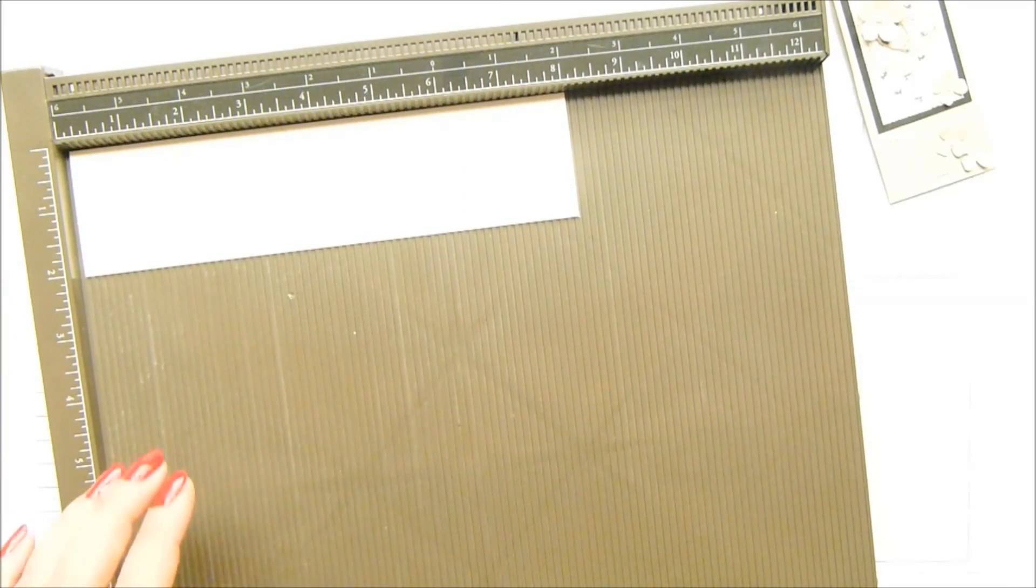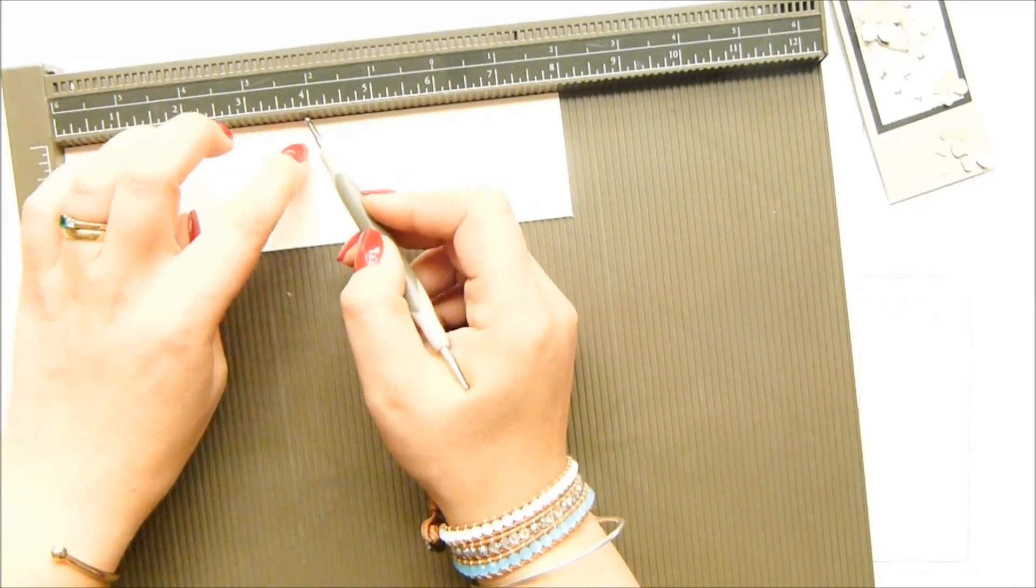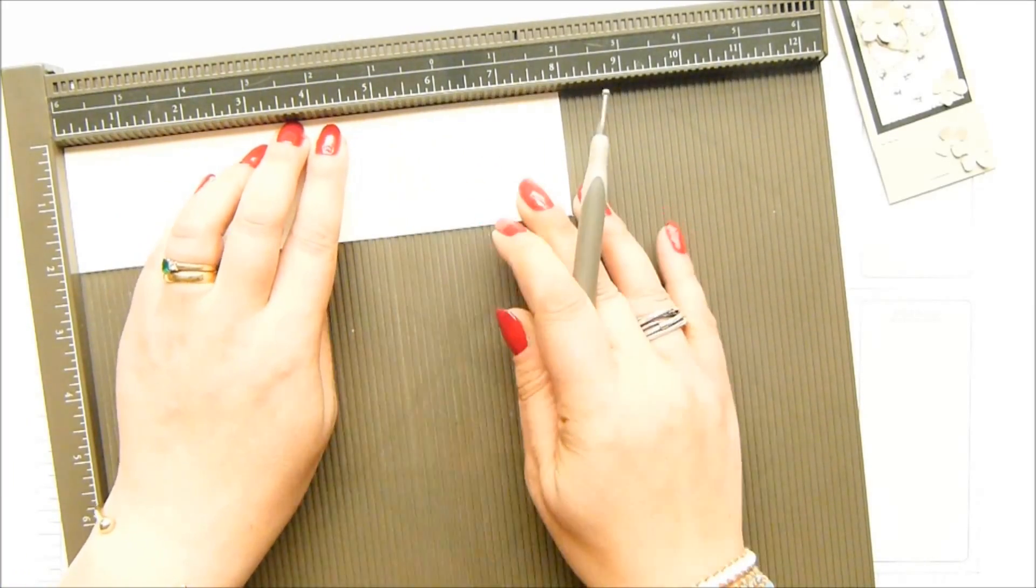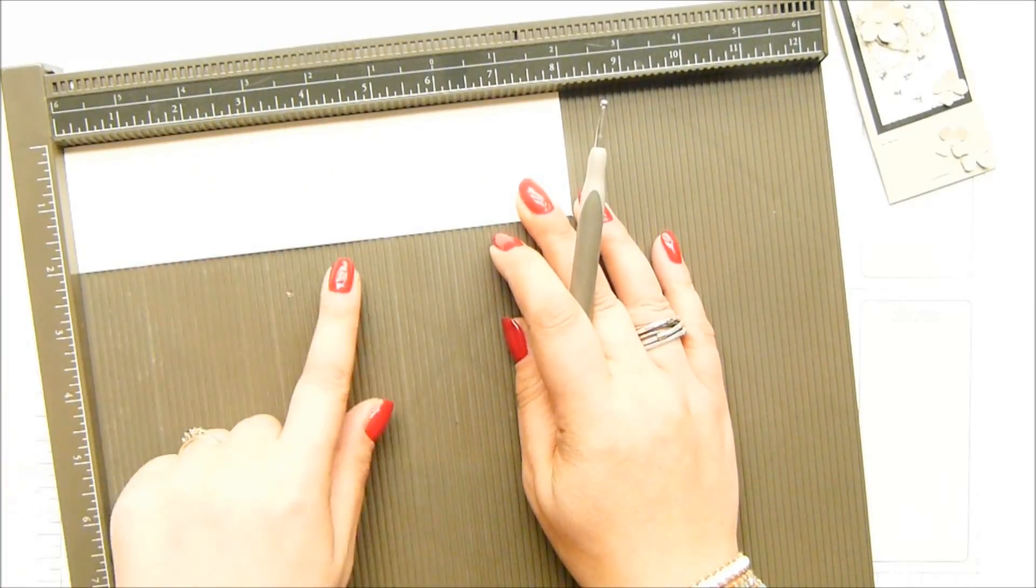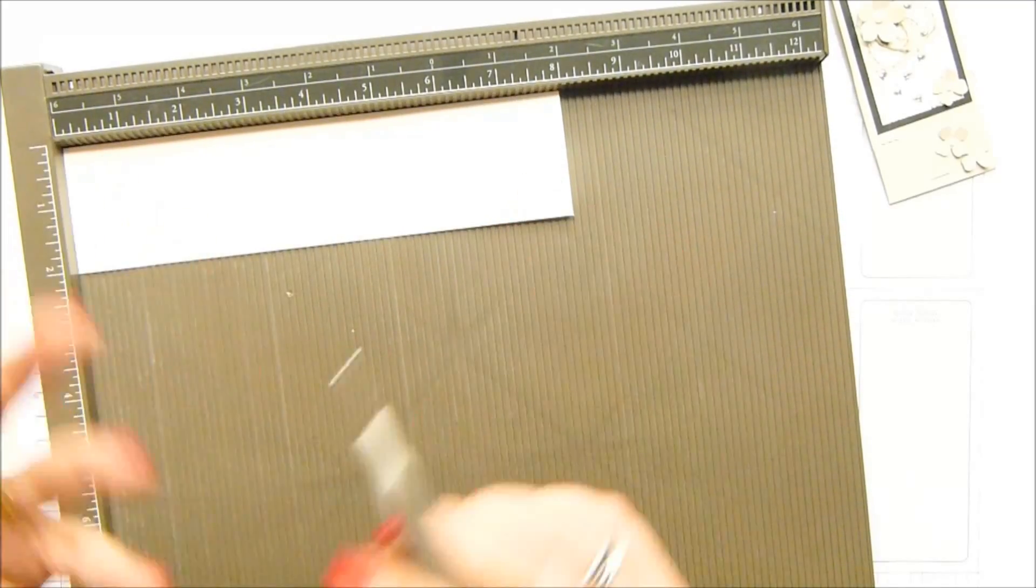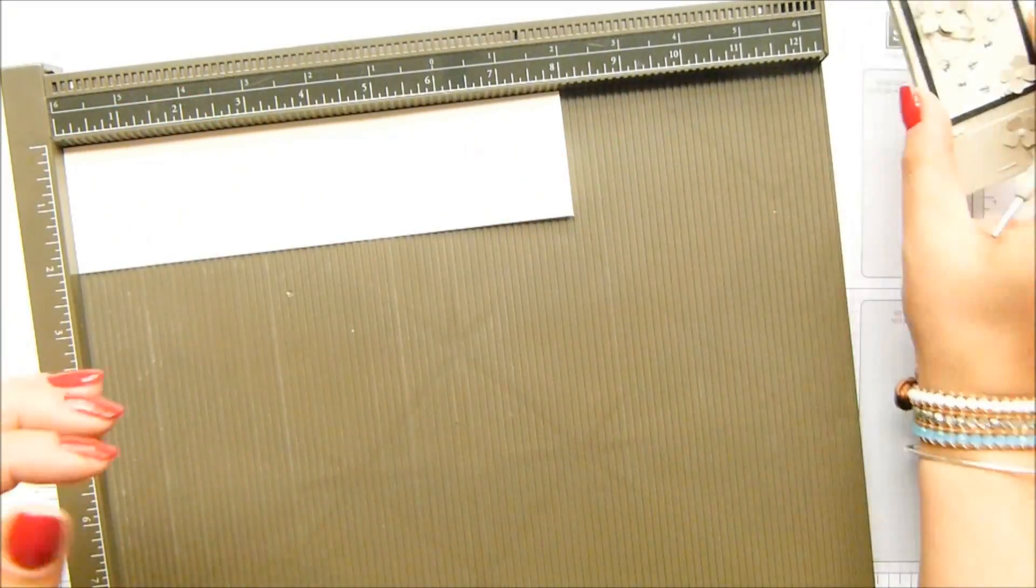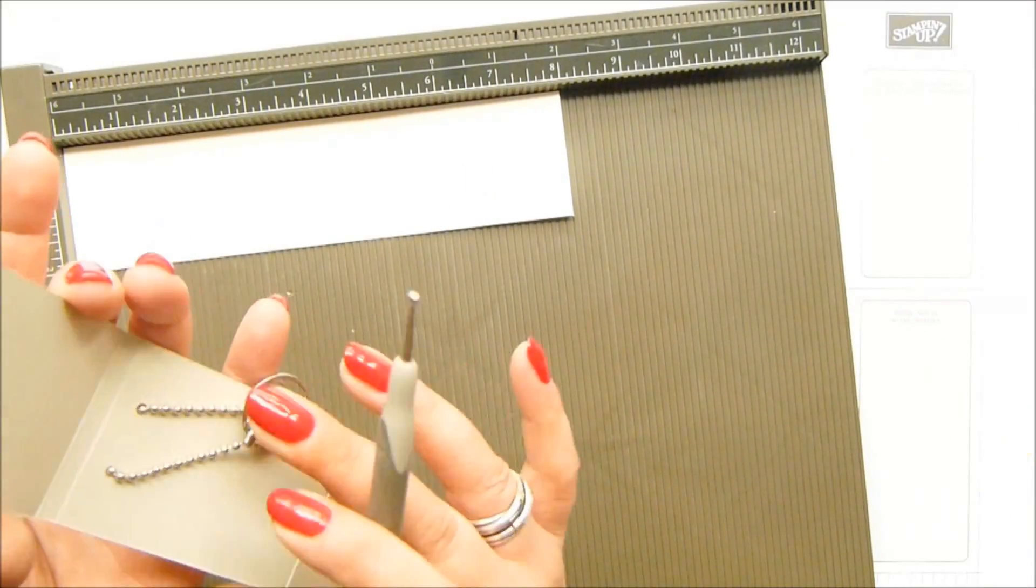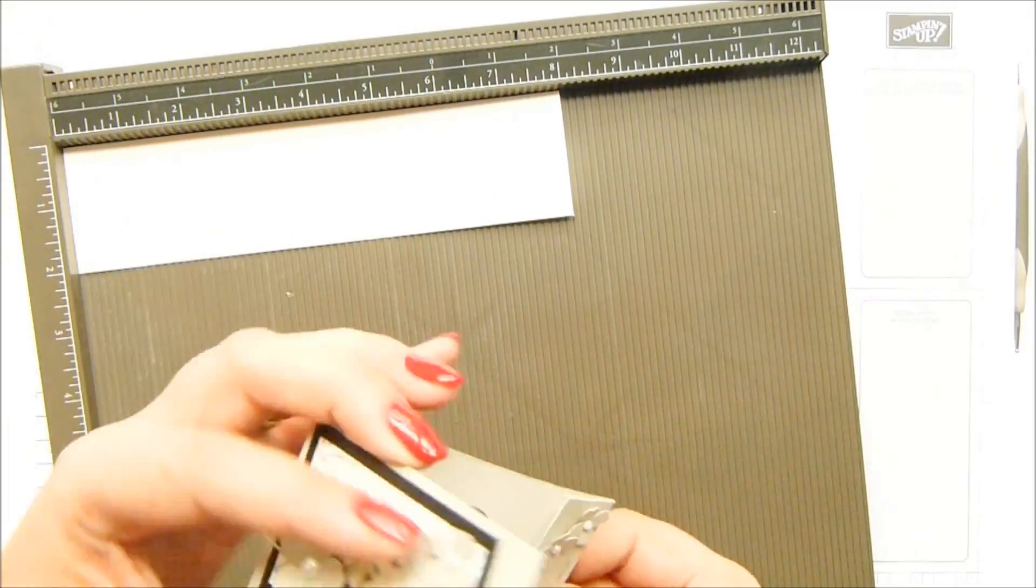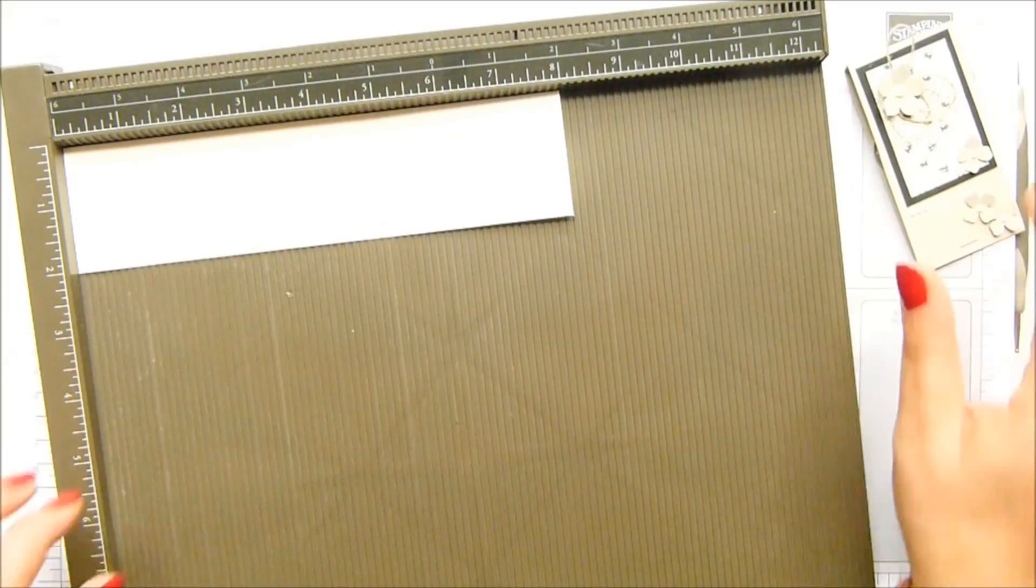And you score that at the one inch mark, four and three quarters and five inches, which in metric is two and a half centimeters, 12 and 12.7 centimeters. That is quite specific, but it's so that you've got enough room for your key chain to hang and for your monogram to not get caught in there.